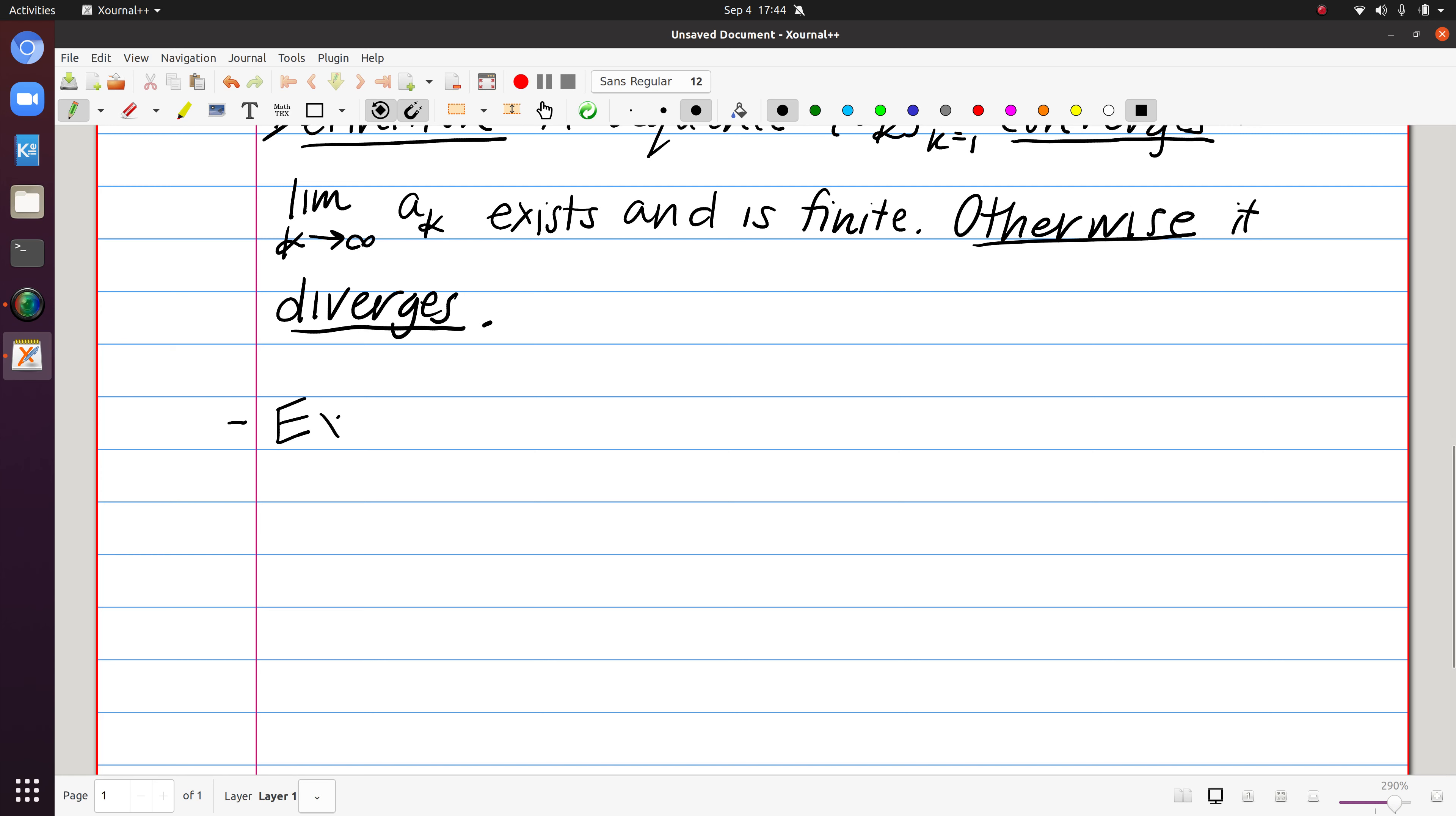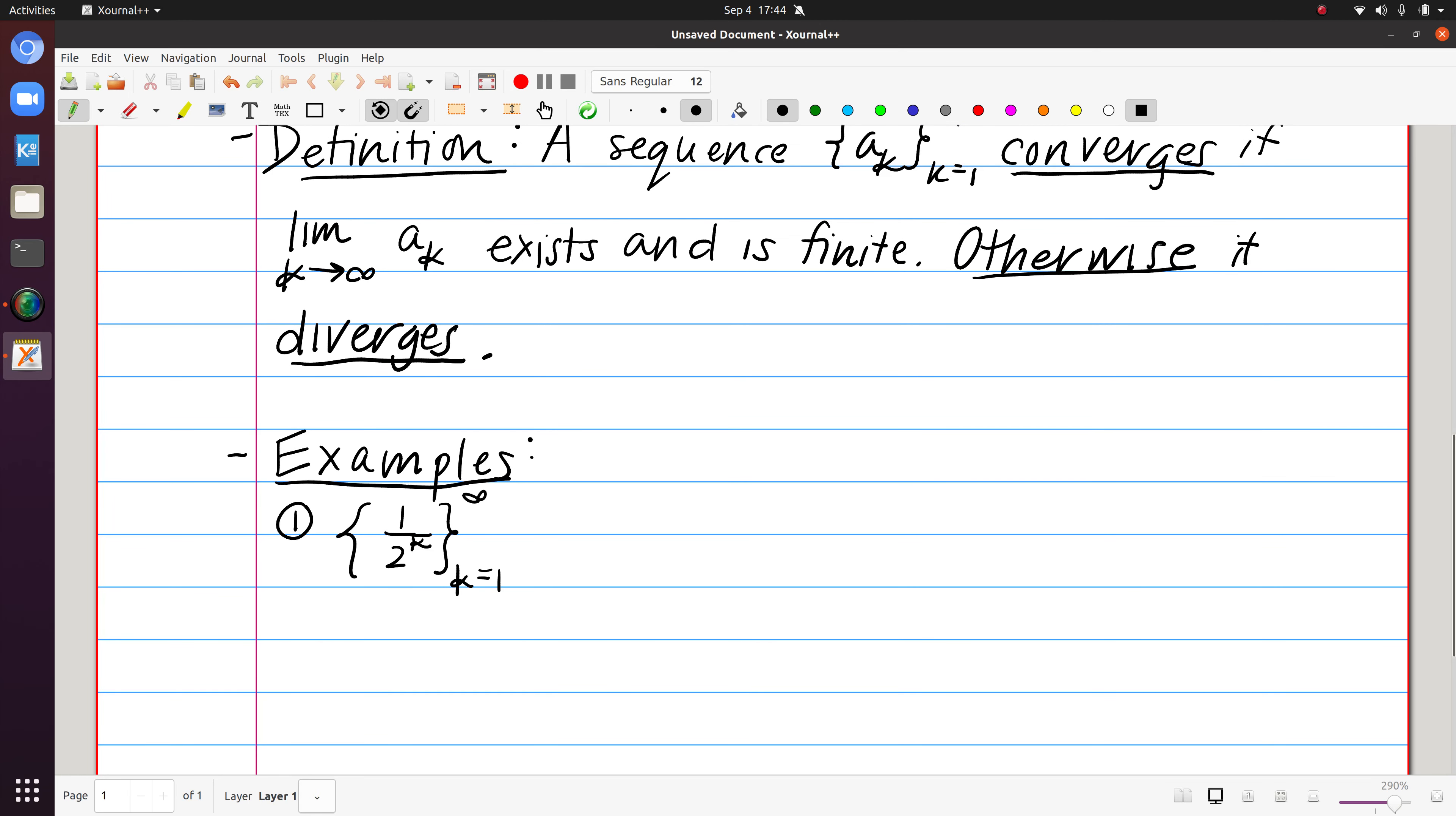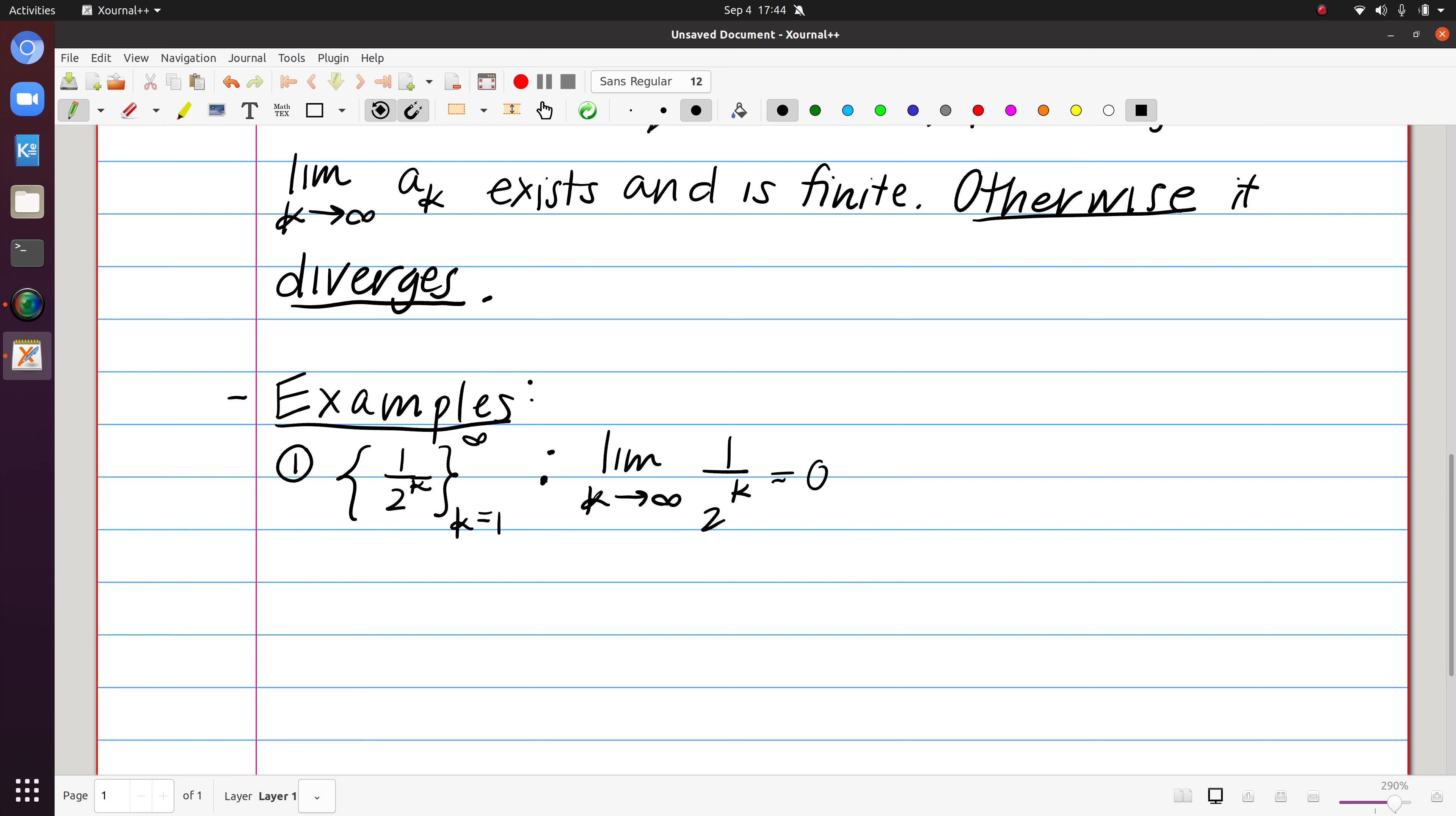So let's look back at the same sequences that we saw in our example above and consider whether those sequences converge or diverge. So the first one we had was the general term 1 over 2 to the k. So according to our definition, I take my a_k, which is in this case 1 over 2 to the k, and I consider the limit as k approaches infinity. So note that here 2 to the k is going to grow without bound. So 1 over this will lead to 0. Because that limit exists and importantly is finite, we would say that this sequence converges.